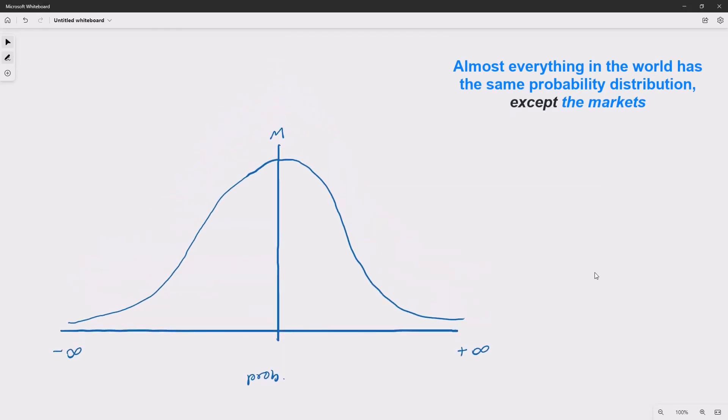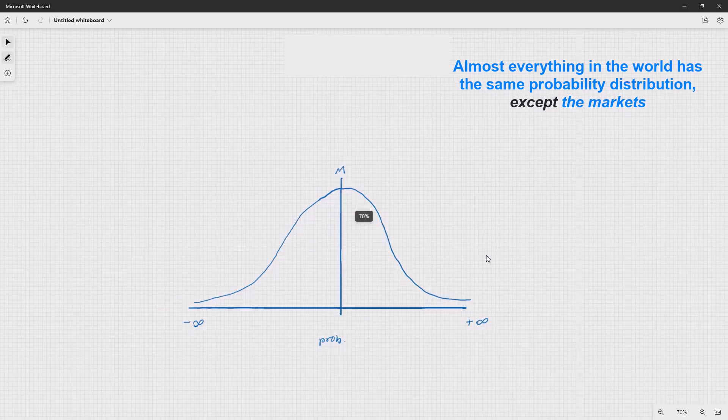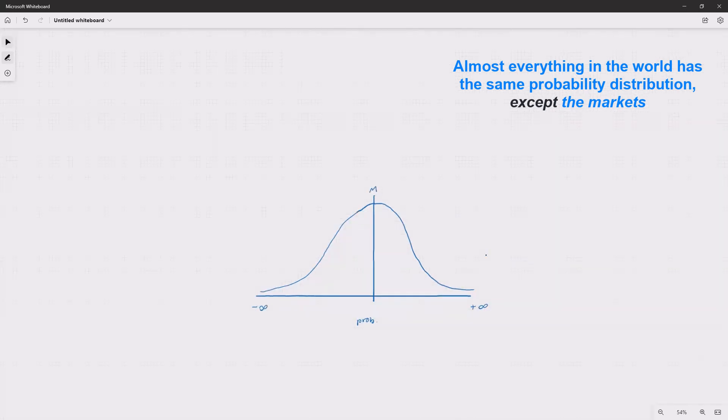So with the markets what happens is - can I make this smaller - all right so what happens with trading is the trading distribution curve doesn't look like this. It starts here, goes here, goes up there, comes back down.